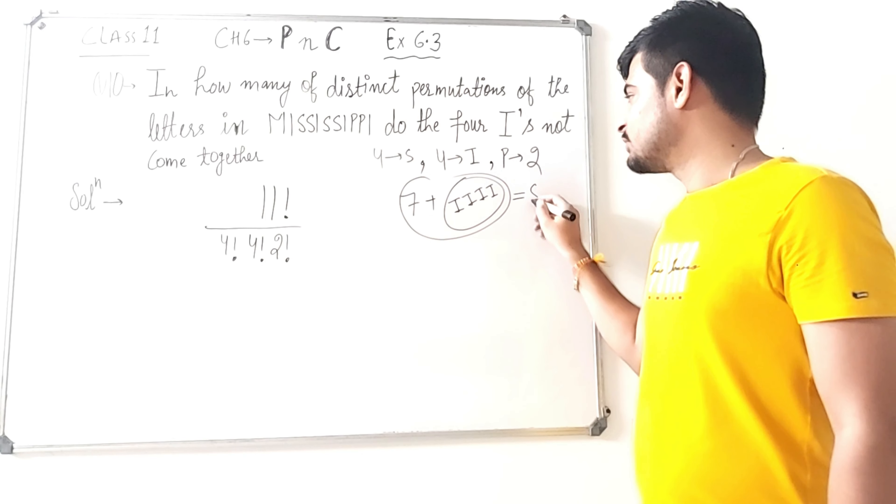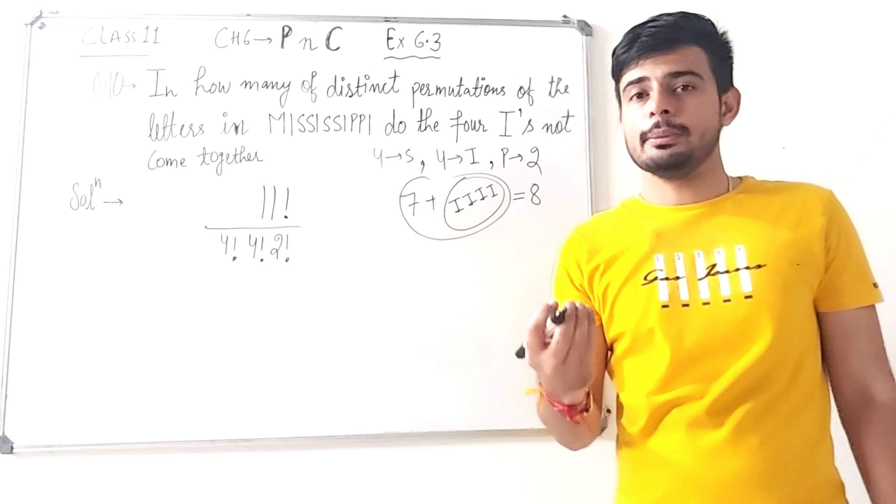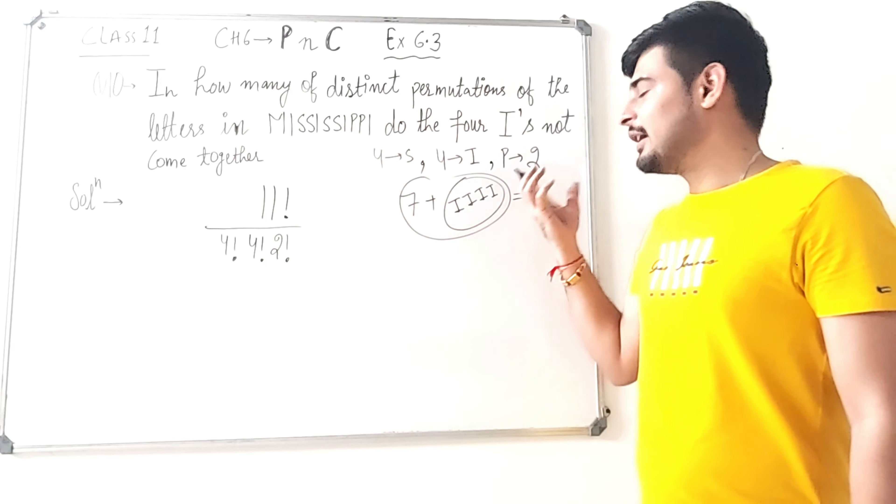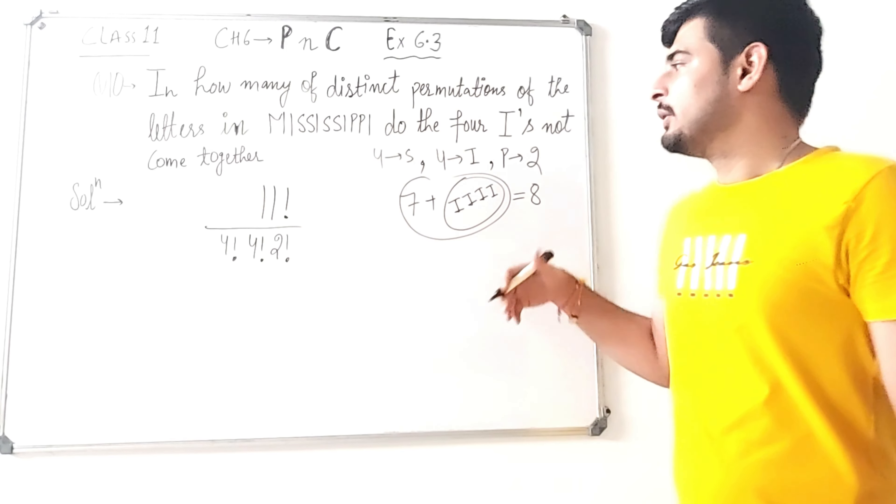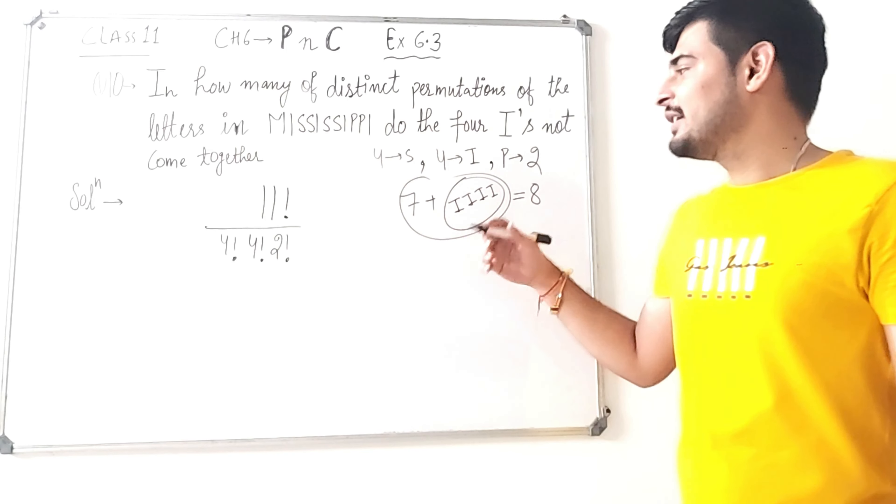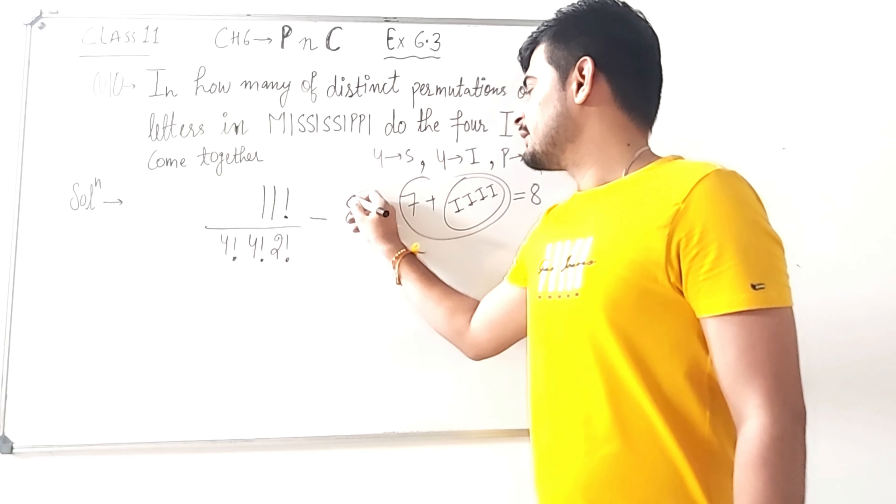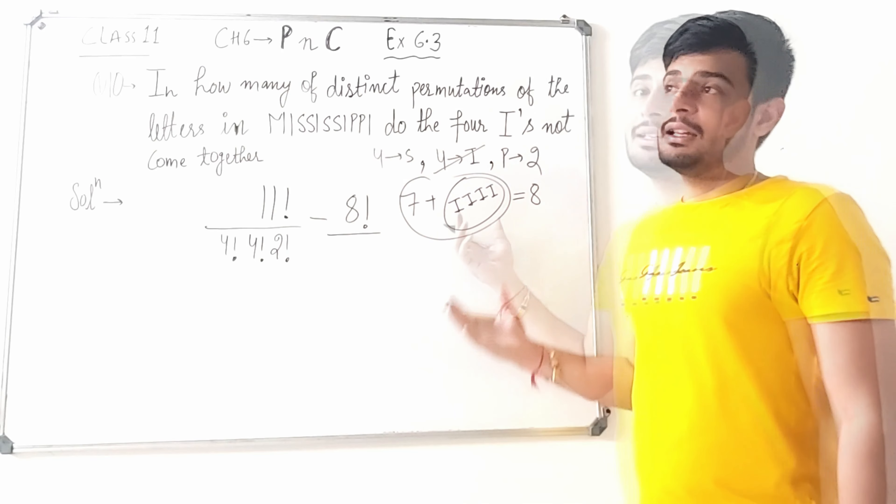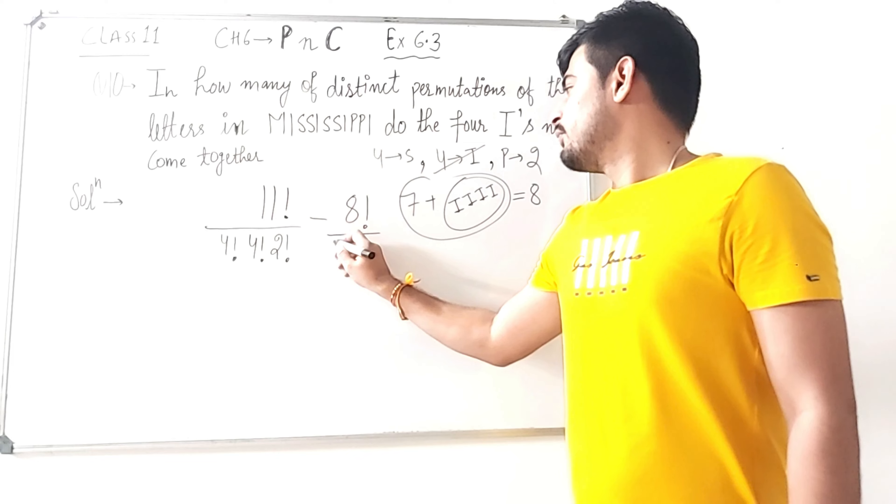8 items total will be made. We have 4 I's in a bag which we have as a single item, so 7 letters plus this I bag, so we have 8 items remaining. So now we can arrange this, we will minus 8 factorial divided by...